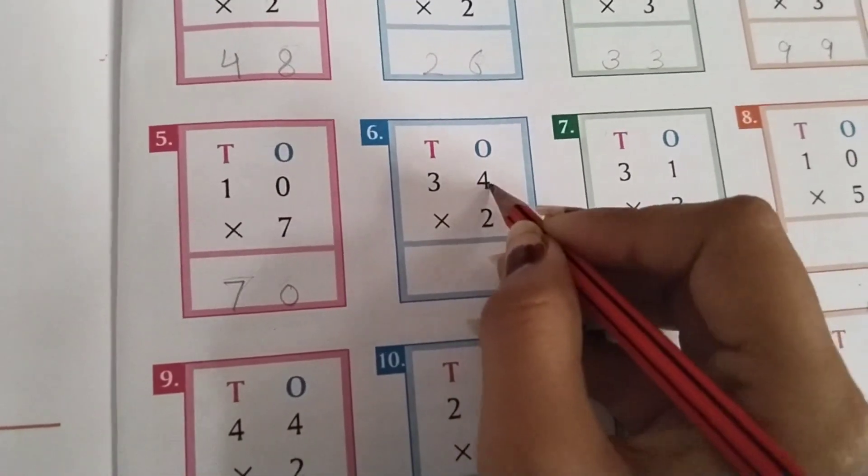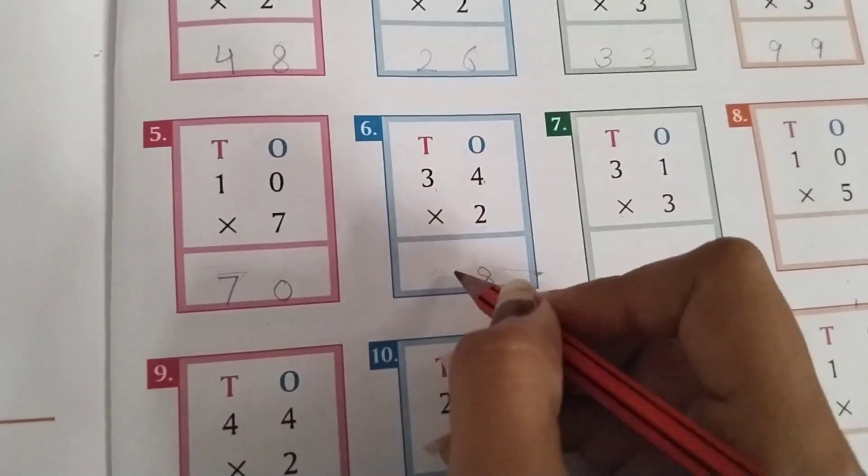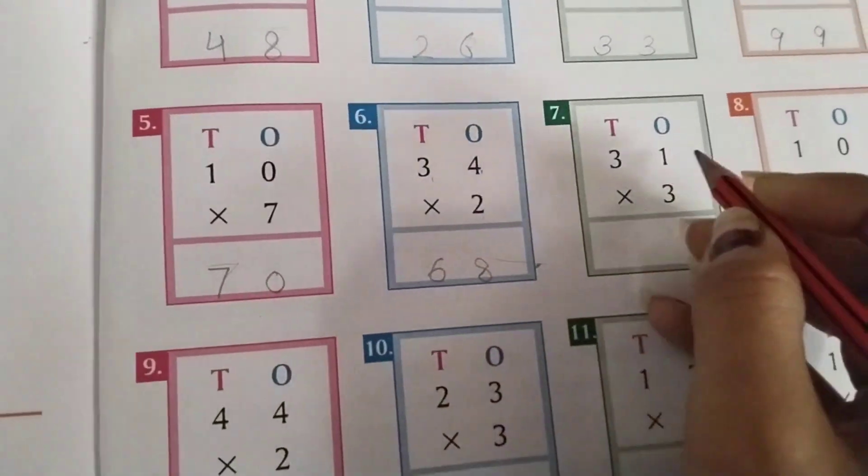34 multiplication 2. 2 4s are 8. 2 3s are 6. 68.